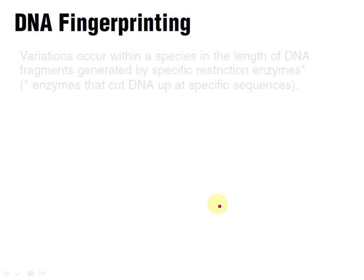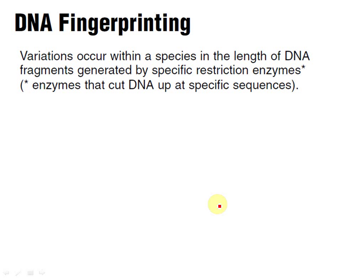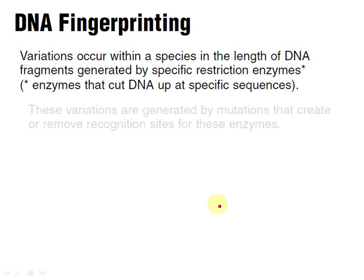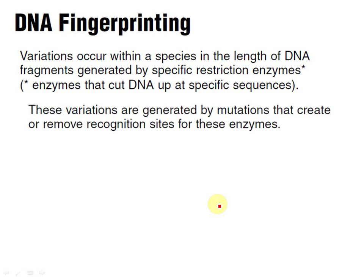So DNA fingerprinting — basically, variations occur within a species along the length of DNA. We all have this individual DNA, and so what happens is when we cut the DNA, because we all have different DNA, the DNA is cut into different lengths because restriction enzymes recognize these bits and cut them in different sizes. So if we cut my DNA with a restriction enzyme and your DNA with a restriction enzyme, we're going to end up with different fragment lengths because the DNA gets cut at different spots. That sounds pretty cool.